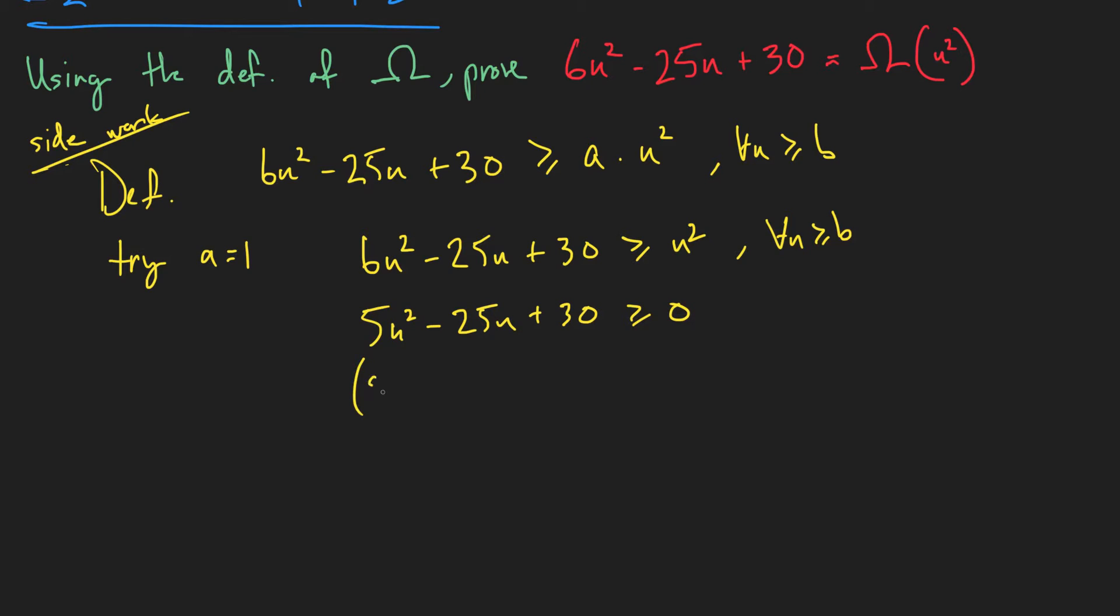Now, with a little bit of math, we can find that 5n minus 15 times n minus 2 is greater than or equal to 0. And if we solve for 0, we find that n should be greater than or equal to 3.